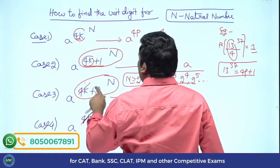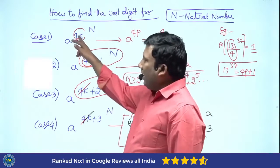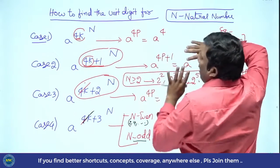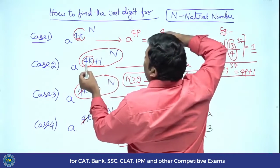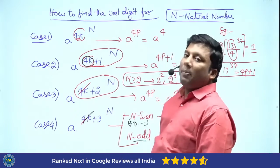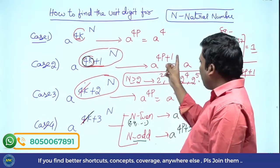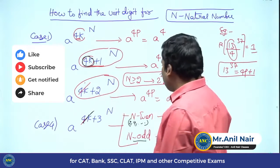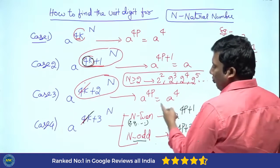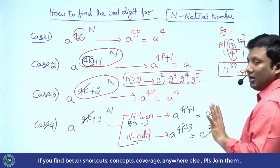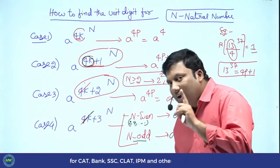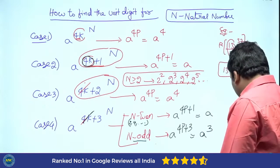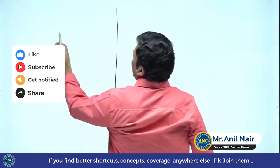Again, listen carefully. When you divide a number by 4, four possibilities will come: remainder 0, remainder 1, remainder 2, remainder 3. 4k is perfectly divisible by 4. 4 to any natural number is divisible by 4, giving A power 4p — that is A power 4. 4k plus 1: 4k divisible by 4, 1 to any power divided by 4 gives remainder 1, so 4p plus 1 gives A.